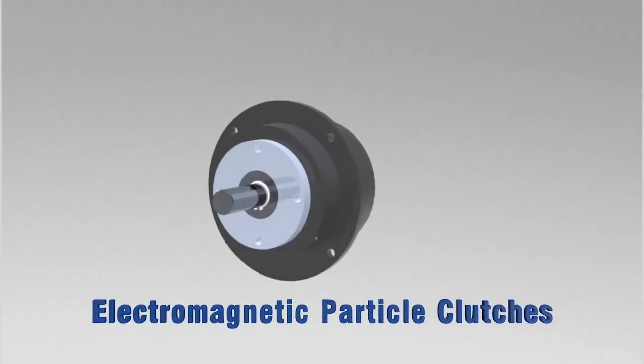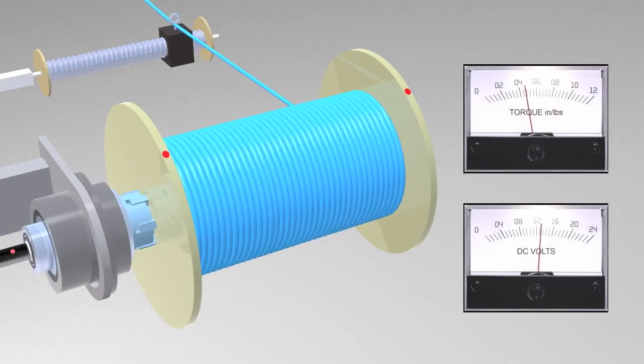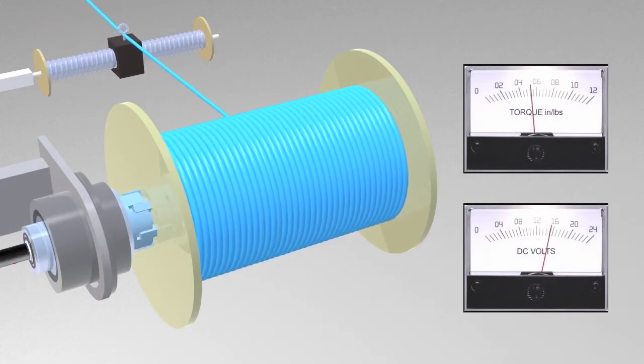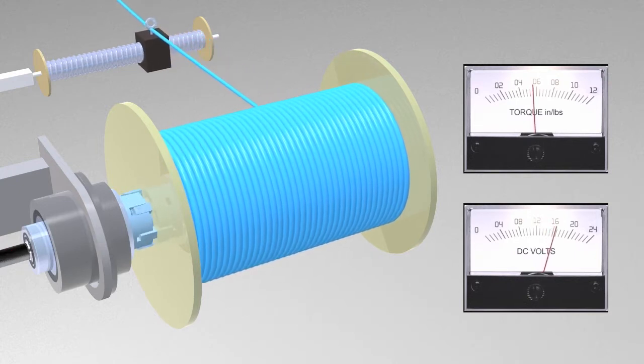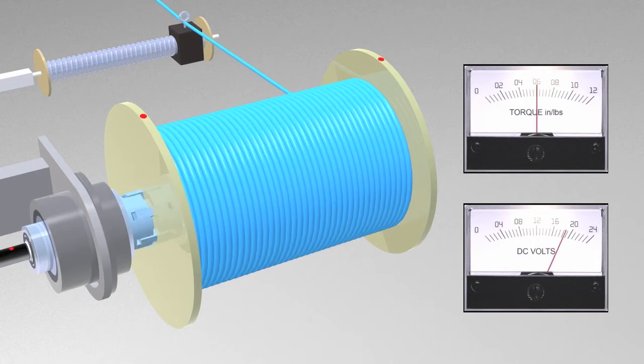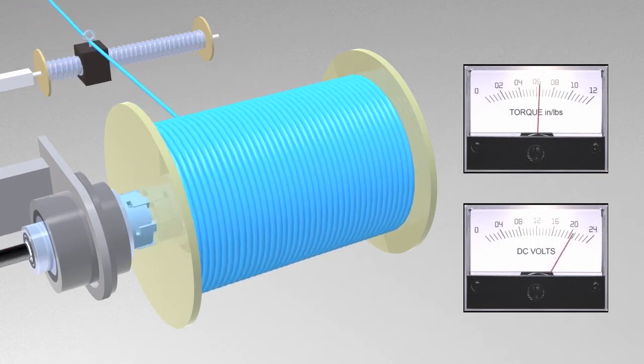Electromagnetic Particle Clutches. Magnetic Particle Clutches are unique in their design from other styles of electromechanical clutches. They have a very wide operating torque range and, like single-phase friction clutches, torque to voltage is almost linear.